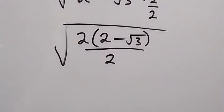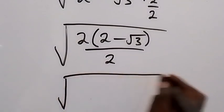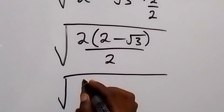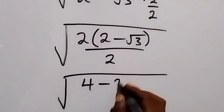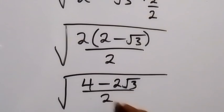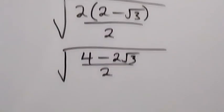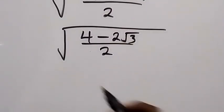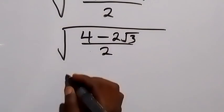Then let's open the bracket with 2. So this becomes square root of 2, open this bracket, we have 4 minus 2 root 3, divided by 2. And in the next step we can write 4 here as 3 plus 1.